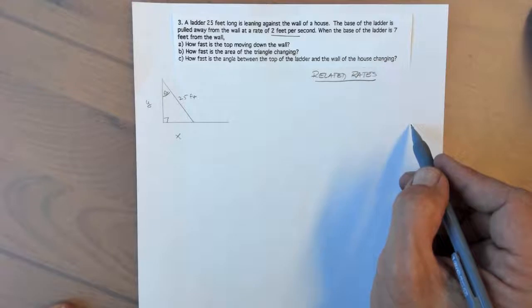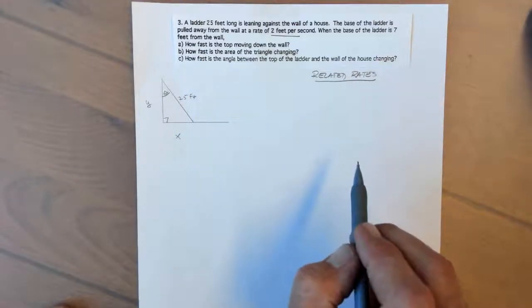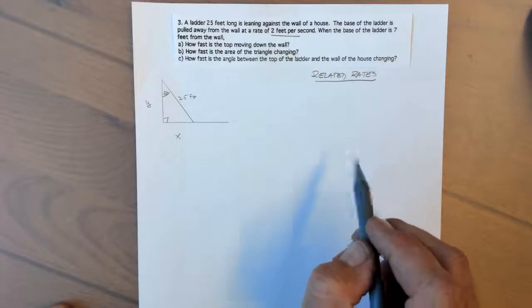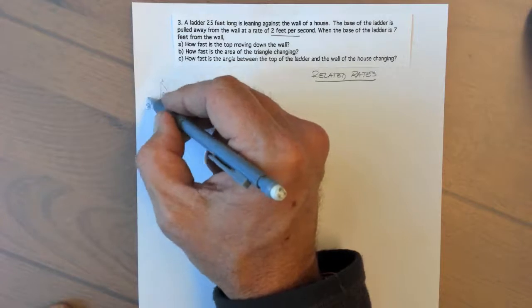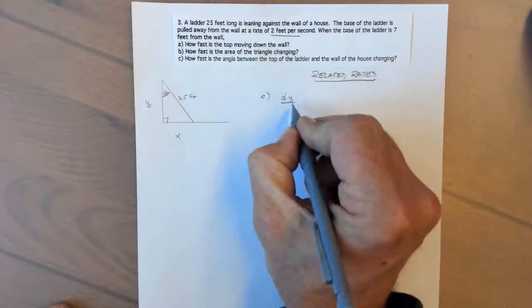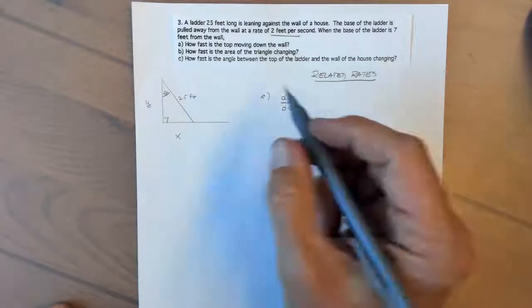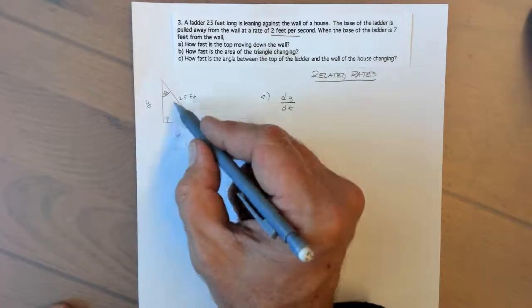We have three questions to answer. First, how fast is the top moving down the wall? That is, how is y changing? So for part A, what we're solving for is dy/dt. I'm going to use the Pythagorean theorem because it relates the three sides.